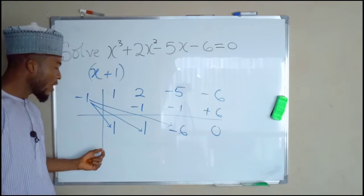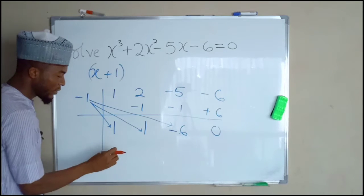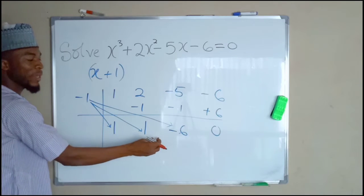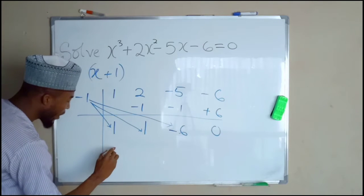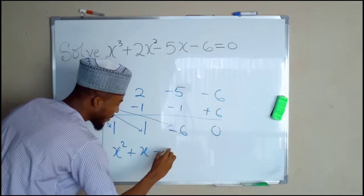Hence, we are going to form a quadratic equation using these constant terms. This is the leading coefficient. This is the coefficient of the middle term. And this is the constant term. So we have x squared plus x minus 6.